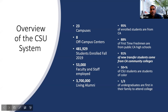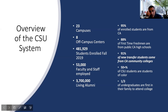Continuing the overview: there are 23 California state universities throughout California, eight off-campus centers, and a total of 481,000 students enrolled for fall 2019, with 53,000 faculty and staff employed in the CSU system. 95% of enrolled students are from California. 88% are first-time freshmen, and for our student veteran population, 91% of student transfers come from California Community College. 50% of CSU students are students of color. And one of my favorite data points — one-third of undergraduates are first in their family to attend college. We refer to them as first-generation students.